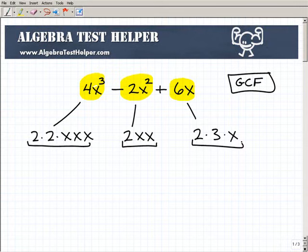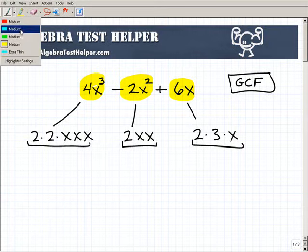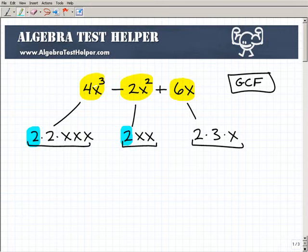This negative 2x squared, I can write this as 2x times x. That's the same thing as 2x squared. And then 6x, I can write that as 2 times 3 times x. The greatest common factor is the greatest thing that all three of these terms have in common.